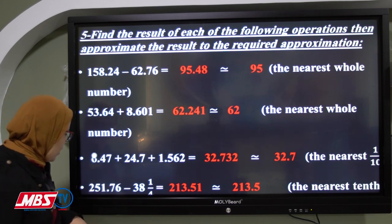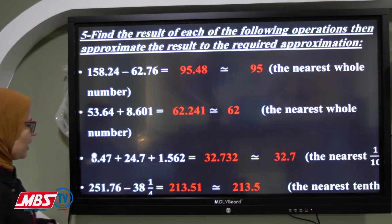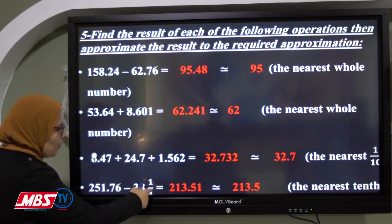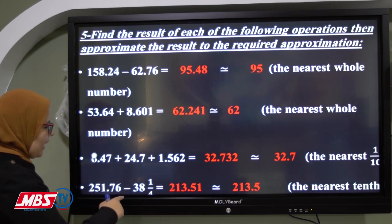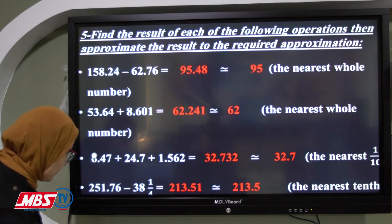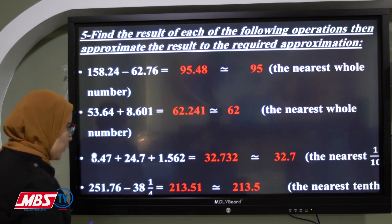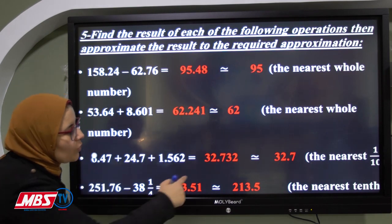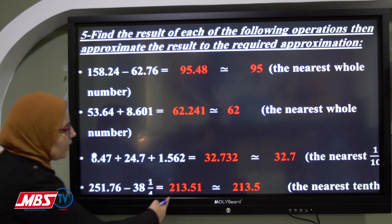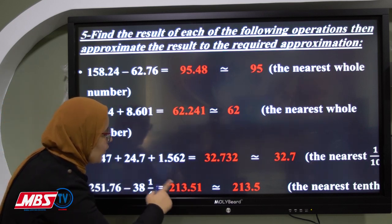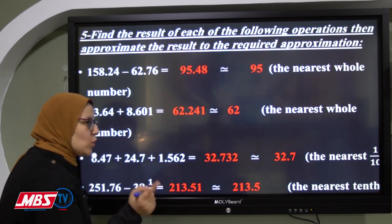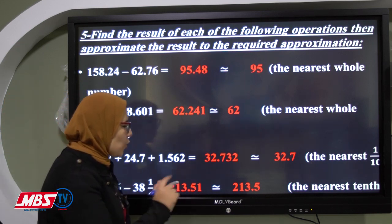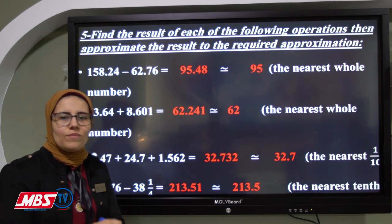For 251.76 minus 38 and one quarter: convert the fraction — one quarter equals 25/100, so we have 38.25. Subtract to get 213.51. Now approximate to the nearest tenth. The tenth digit is 5 and the hundredths digit is 1. One is poor, so we give nothing to 5 — it stays as 5. The answer is 213.5. That is our lesson for today. Thank you and I hope you enjoyed it.